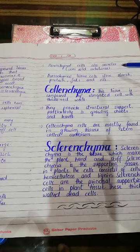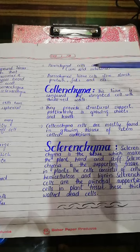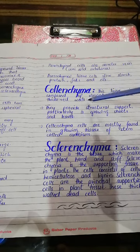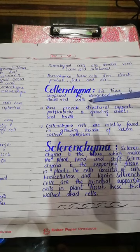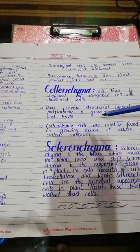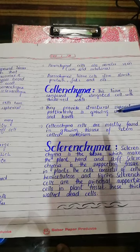Parenchyma cells store protein, fats, and oils. Collenchyma — this tissue is composed of elongated cells with thickened walls. They provide structural support, particularly in growing shoots and leaves.